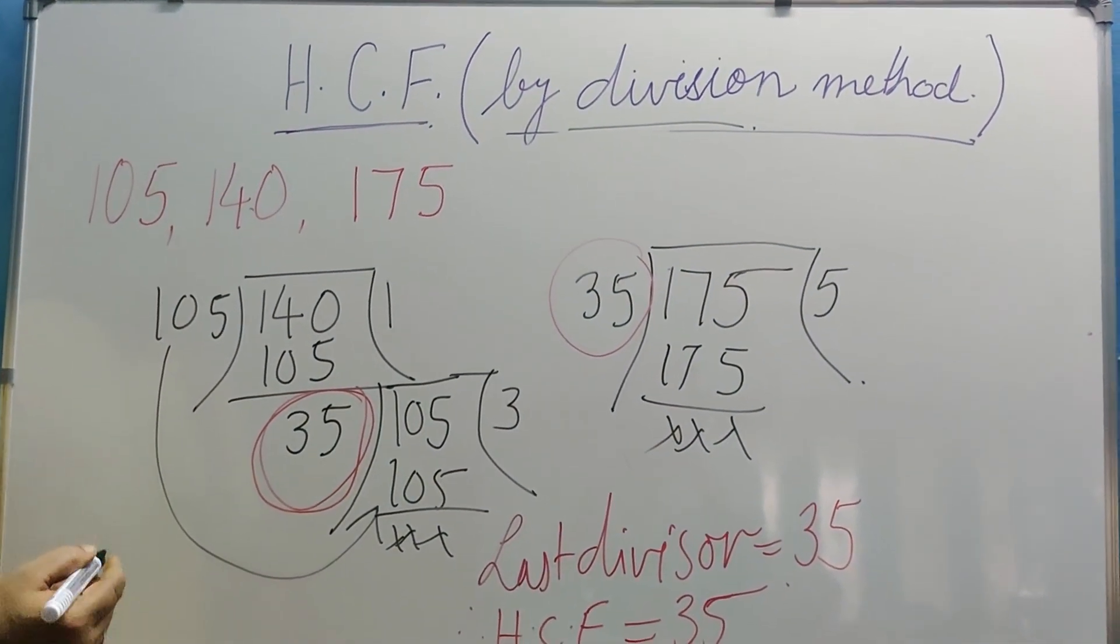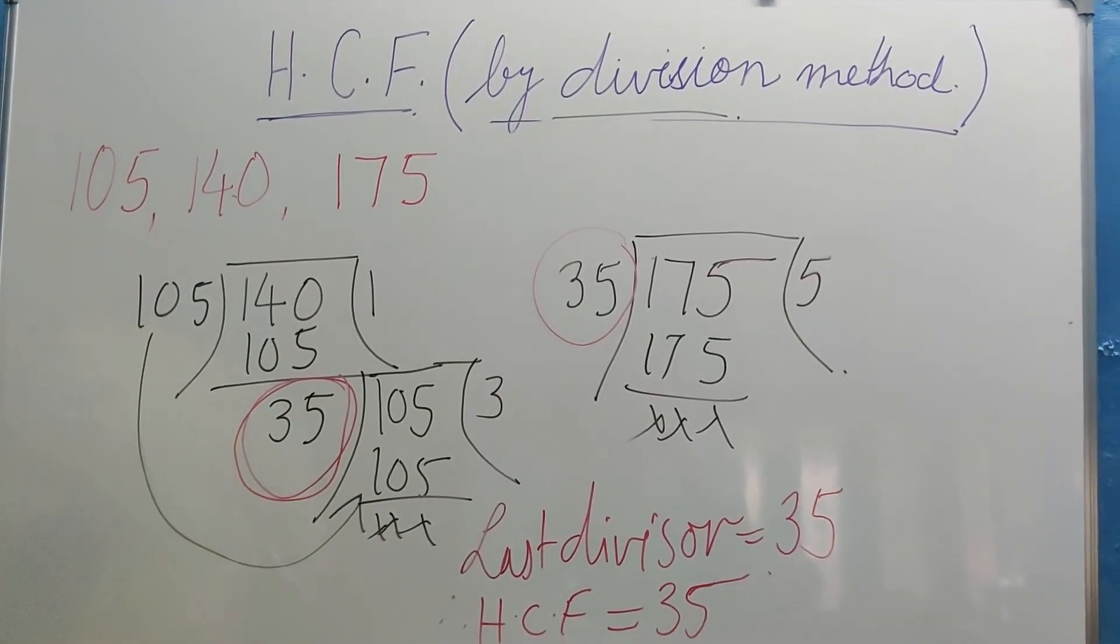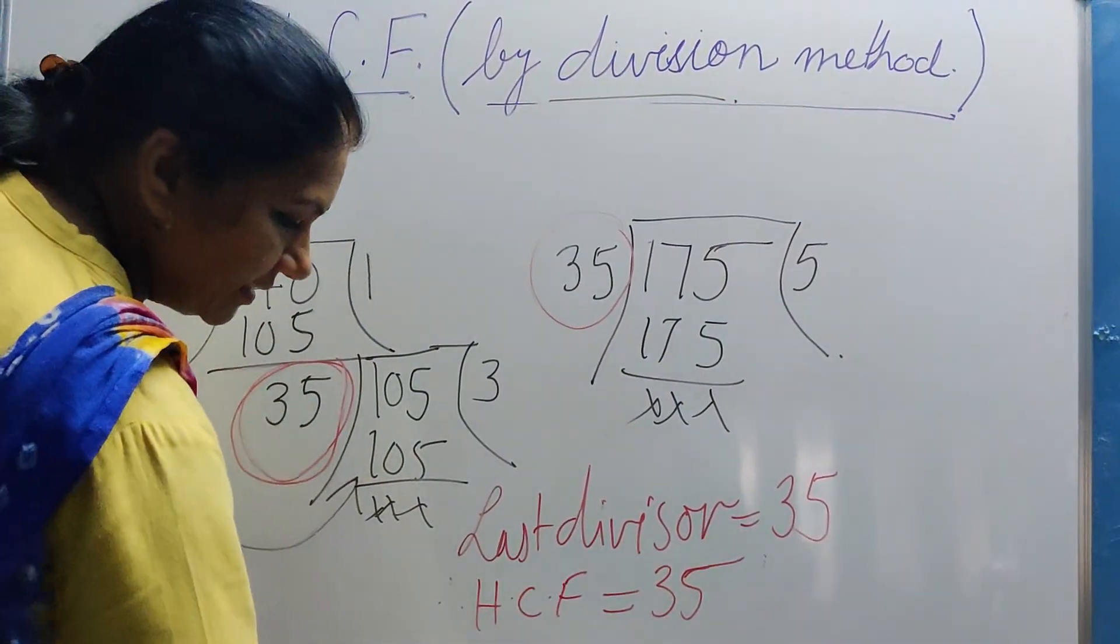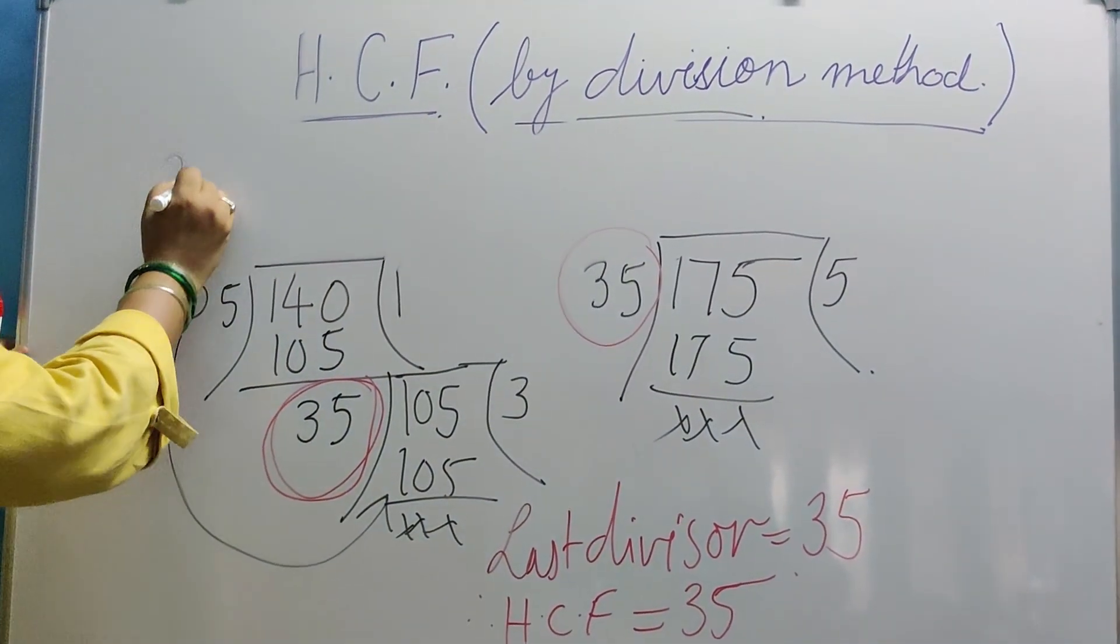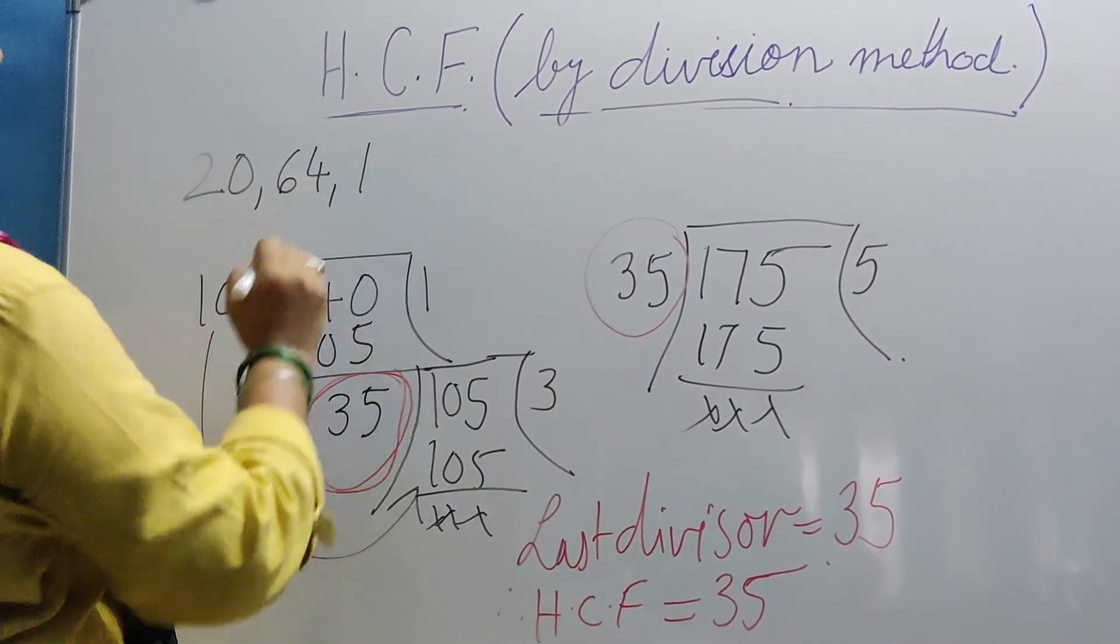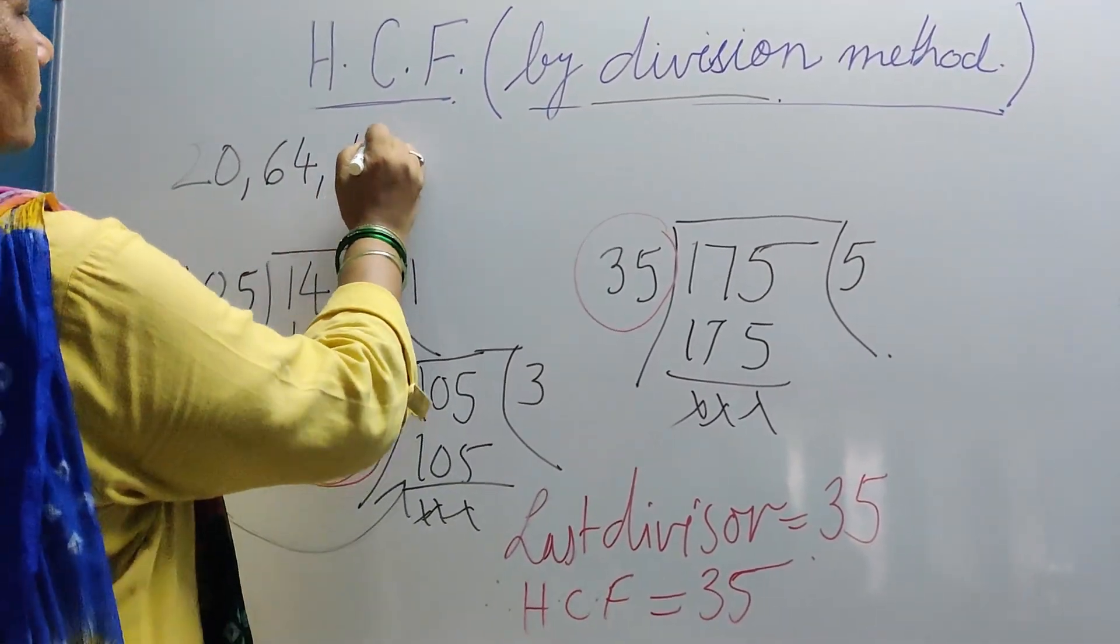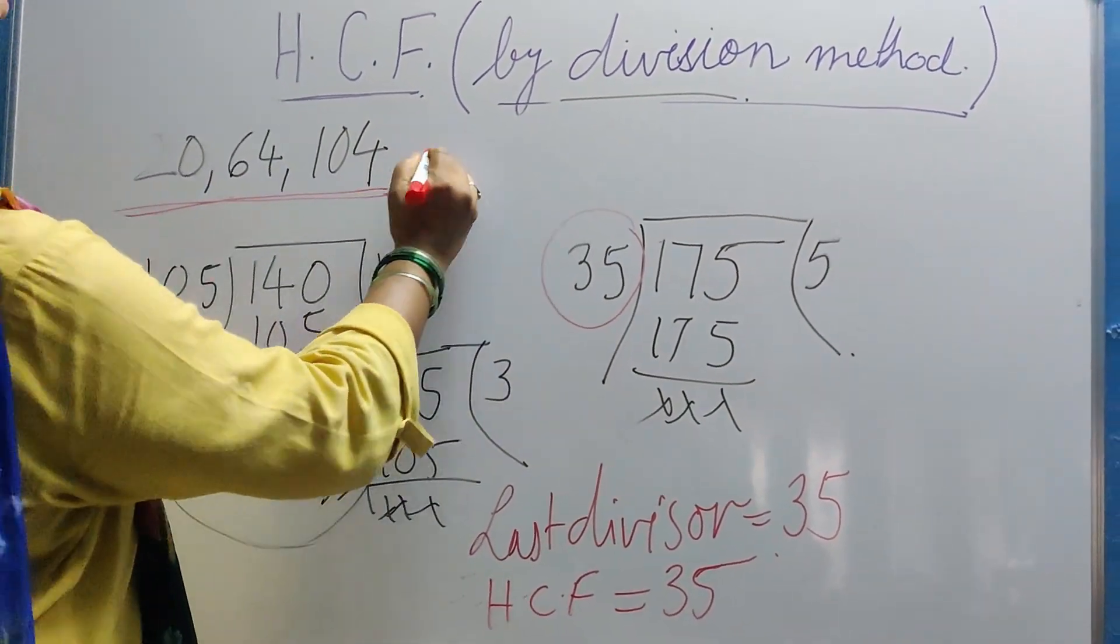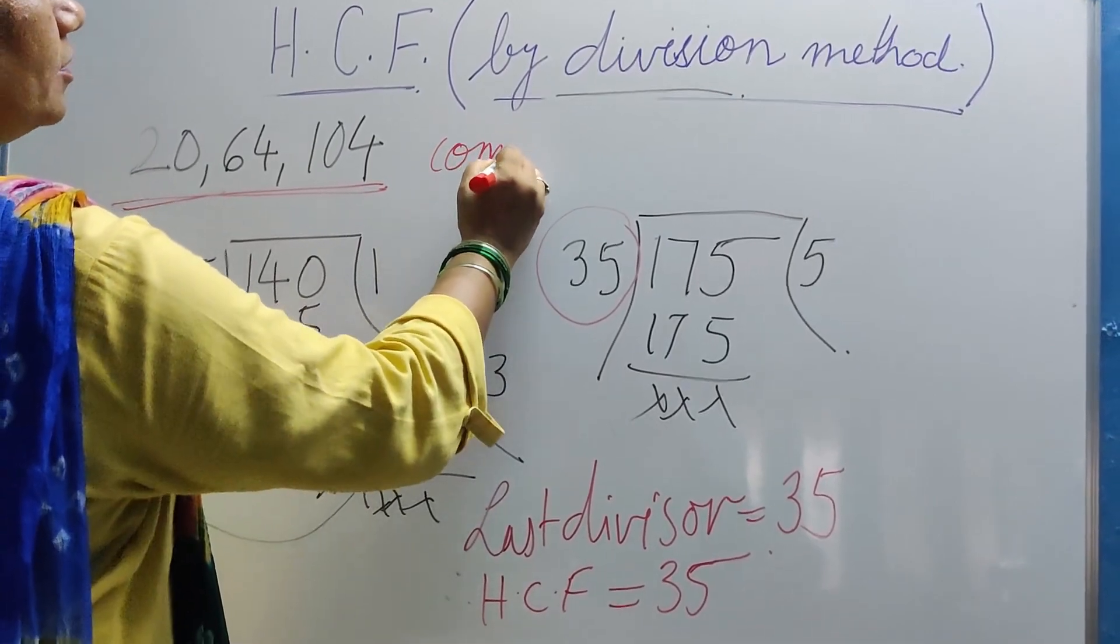Now I would like you all to find out HCF by division method of these three numbers: 20, 64, and 104. Find the HCF of these three numbers and write the answer in the comment box.